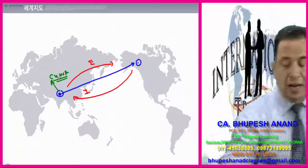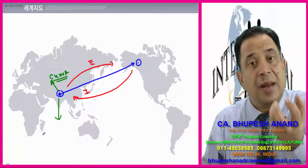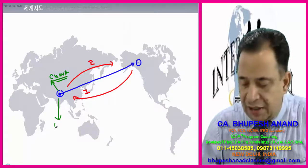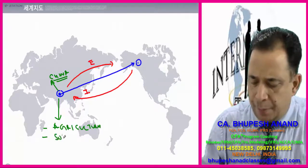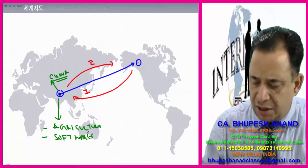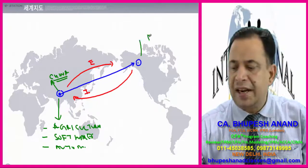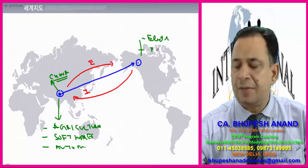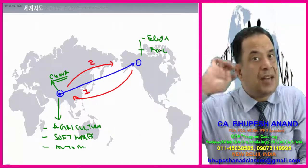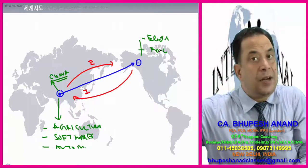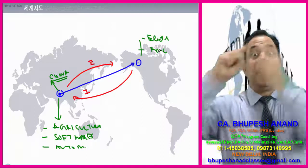What are the benefits of international trade? If India is more focused on agriculture or masters in software, and the other country is masters in electronics or FMCG products, then each country will focus on what it does best, produce more, and there will be economies of scale. Think of it from a broader perspective.